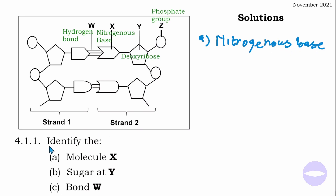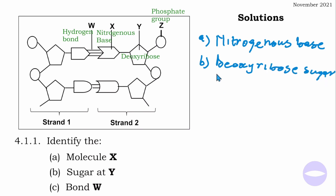Question 4.1.1b: identify the sugar at Y. The sugar at Y is deoxyribose sugar. This is the sugar found in a DNA molecule. RNA contains ribose sugar, while DNA contains deoxyribose.